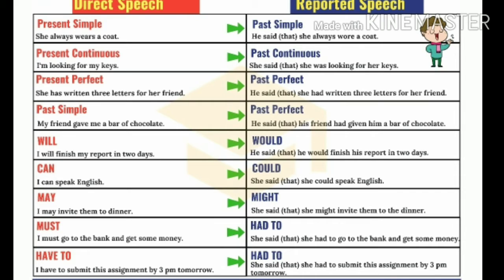Will becomes would, shall becomes should, may becomes might, can becomes could. Must remains the same in speculation. If the same 'must' is used in obligation, then it changes into 'had to.' These are the few important things to learn for direct and indirect speech.